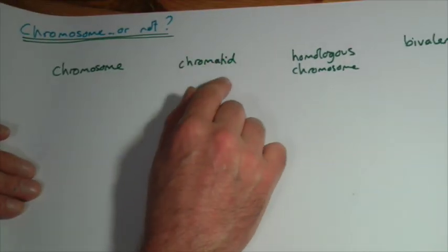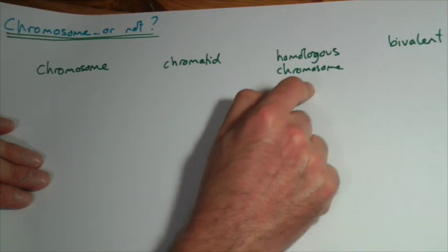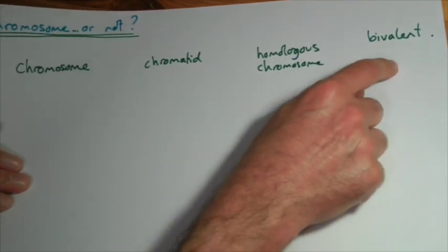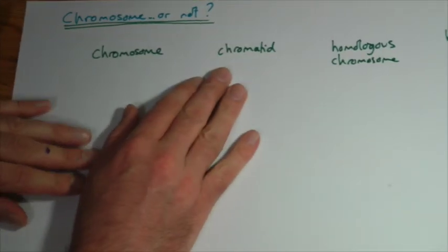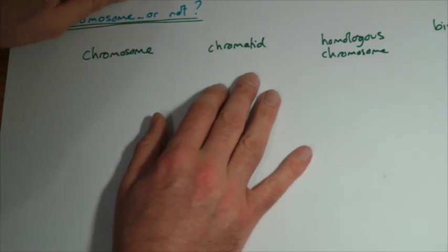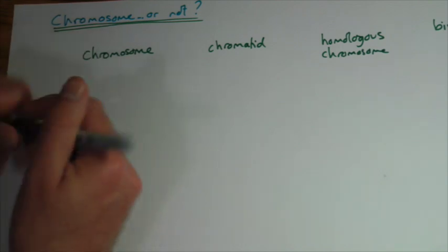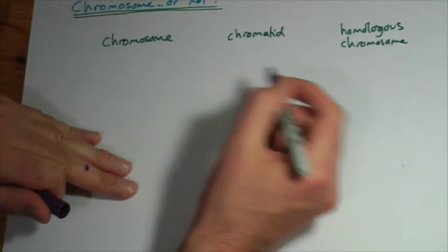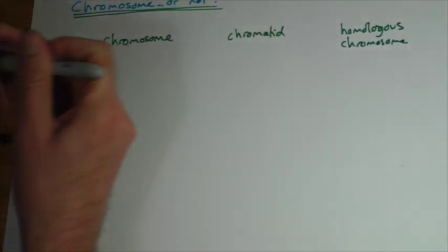Chromosomes, chromatids, homologous chromosomes, and bivalents. They're all different things but the terms get used a bit interchangeably and I want to just try and clear some of them up. So a chromosome, normally inside of the nucleus.